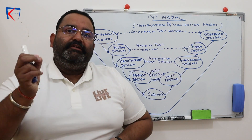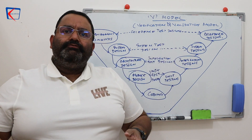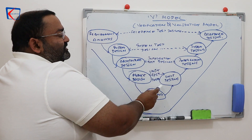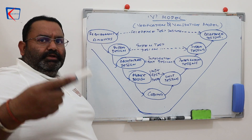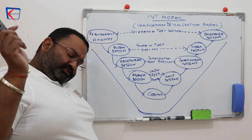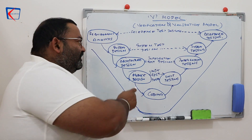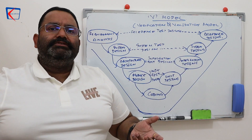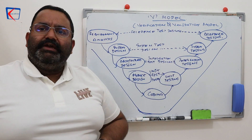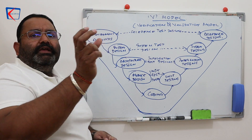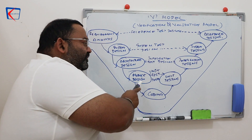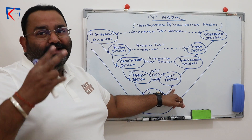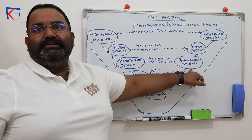In the waterfall model, testing is a separate stage, but in the V model, testing is involved at each stage. The stages of the V model are: requirement analysis, system design, architecture design (how your system will work as a whole and how different components interact), module design (how each small program will be designed), and then coding.